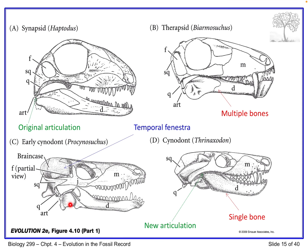This is an early cynodont, what's known as a mammal-like reptile, so becoming more mammal-like. We still see the quadrate and the articular, but we now have the cheekbone developing, and the temporal fenestra is the space behind that cheekbone. So this is a uniquely mammalian feature that wasn't present in the earlier forms.